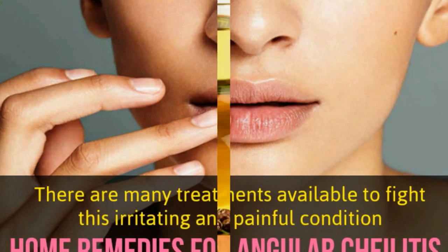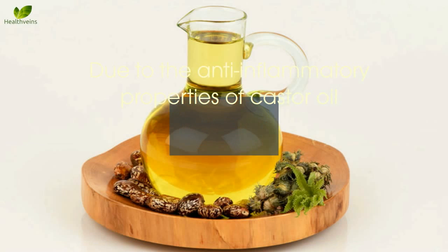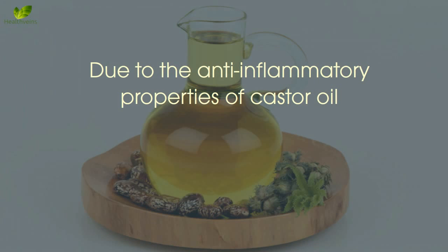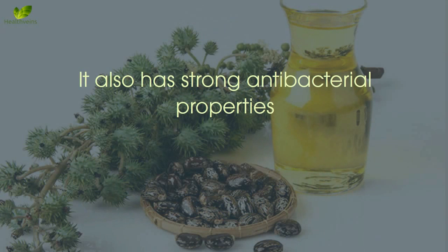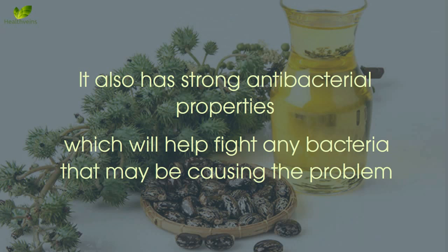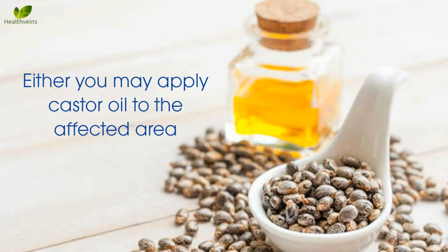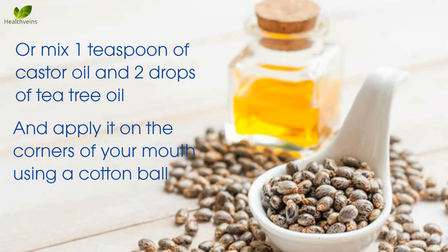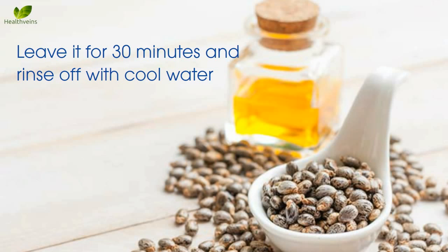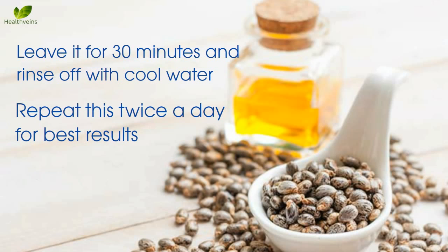Remedy number one: castor oil. Due to the anti-inflammatory properties of castor oil, it helps to tone down angular cheilitis by minimizing pain and inflammation. It also has strong antibacterial properties which help fight any bacteria causing the problem. You may apply castor oil directly to the affected area, or mix 1 teaspoon of castor oil with 2 drops of tea tree oil and apply it on the corners of your mouth using a cotton ball. Leave it for 30 minutes and rinse off with cool water.